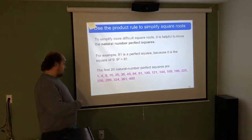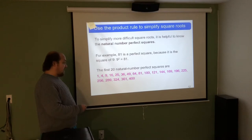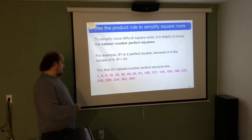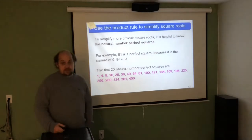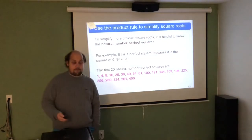The first 20 perfect squares correspond to squaring the numbers 1 through 20.